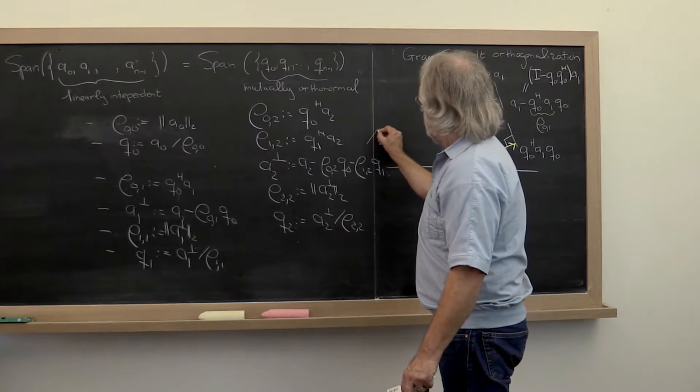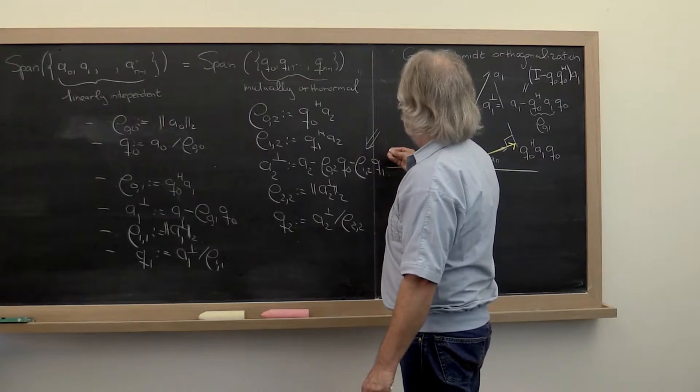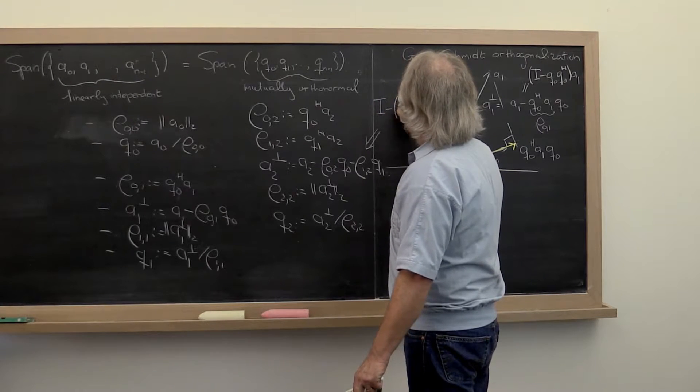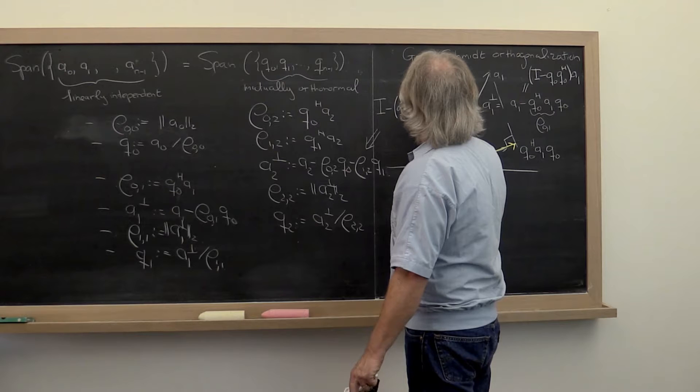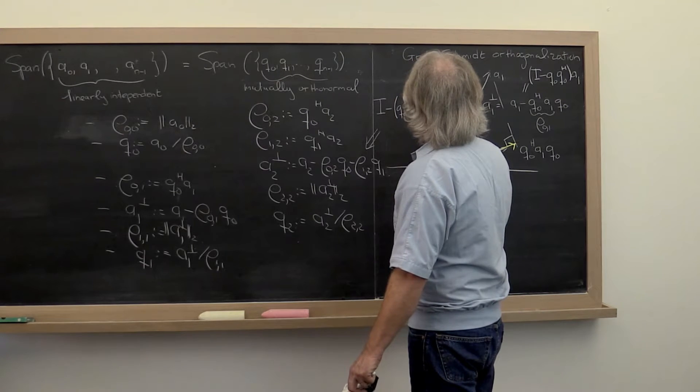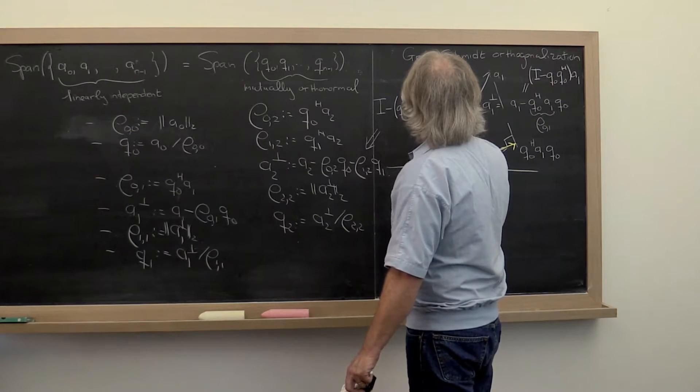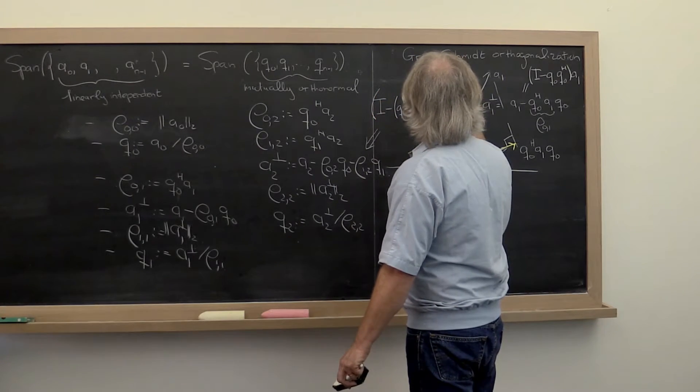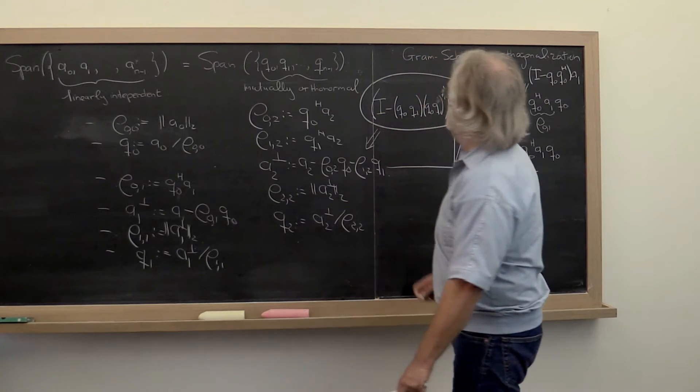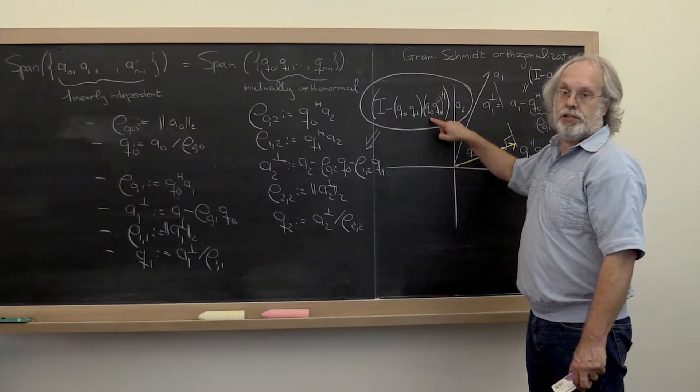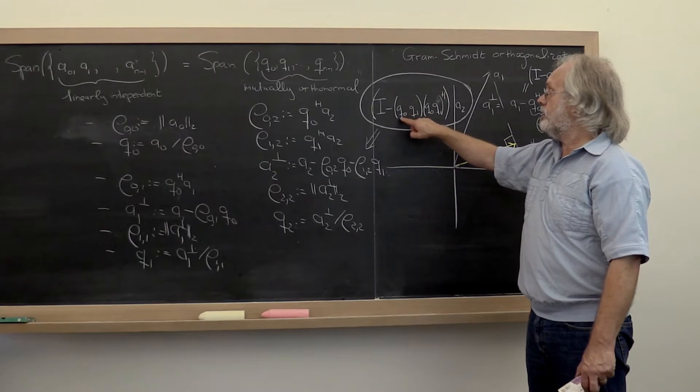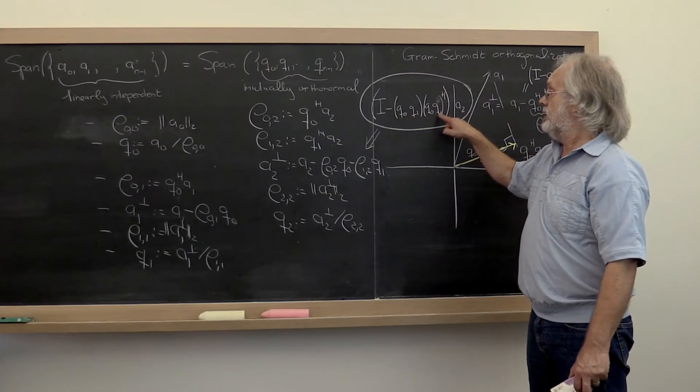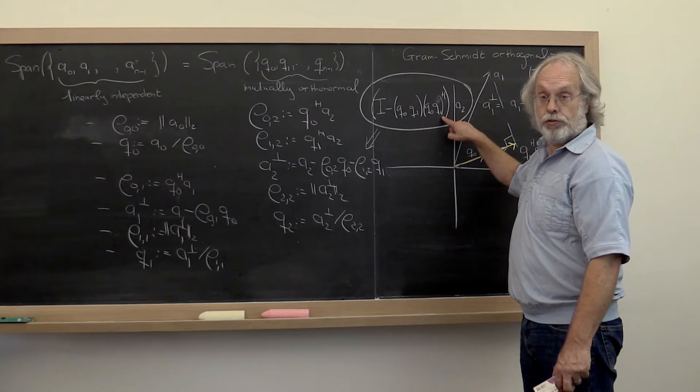This right here we can write as I minus the matrix Q0, Q1 times the matrix Q0, Q1 Hermitian transpose times the vector A2. This here is the matrix that projects onto the span of vectors Q0, Q1, this matrix. This is the matrix that projects onto the space orthogonal to that.